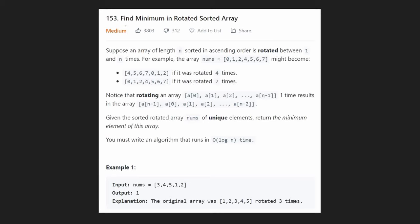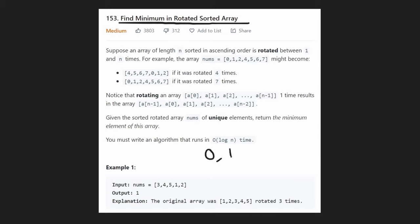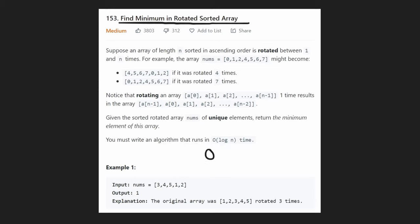Welcome back. Today let's solve the problem: Find Minimum in a Rotated Sorted Array. We are given an input array of length n that is sorted in ascending order but it could be rotated one to n times. For example, rotating by one means taking the rightmost element and moving it to the beginning. Rotating by two means taking the last two elements and moving them to the beginning. We want to find the minimum value.